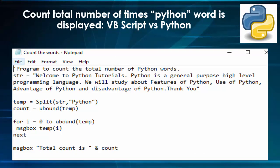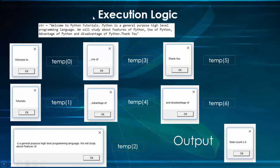The third, slightly more complicated program finds how many times the word 'python' appears in a paragraph, compared with VBScript. The coding logic reads the string, uses the split function to split by the word 'python', and stores the values in an array — temp[0], temp[1], temp[2], and so on. It then finds the total count and prints how many times it is displayed. When split by 'python', temp[0] is 'Welcome to', temp[1] is 'tutorials', and so on.